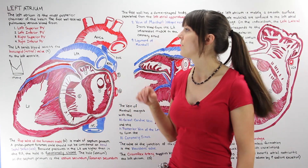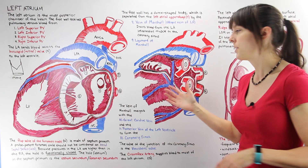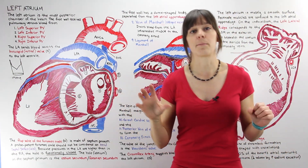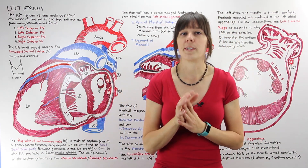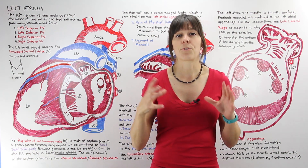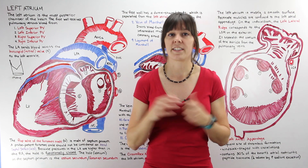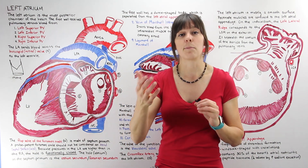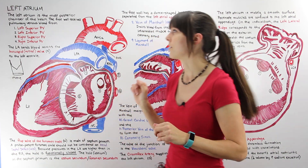In today's video we're going to talk about the left atrium. I've drawn three different diagrams that give different views of the left atrium so that we can see it in its entirety. The left atrium is the chamber of the heart that drains blood from the pulmonary system. Four pulmonary veins come in and drain into the left atrium. It's also located at the most posterior portion of the heart — it's the most posterior chamber.